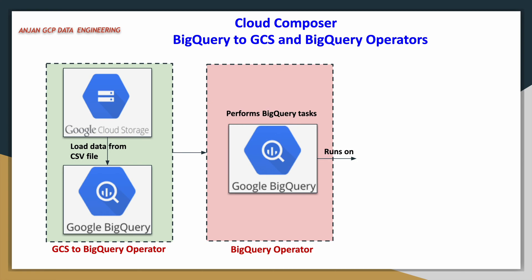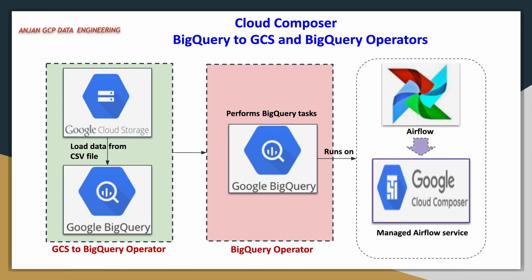In the second task we will perform some data aggregation using SQL - a simple GROUP BY and summation using the table created in the previous task by the GCS to BigQuery operator. We will also use a DDL statement to create one more table with that aggregated SELECT statement. Both these tasks will be running on Google Cloud Composer.